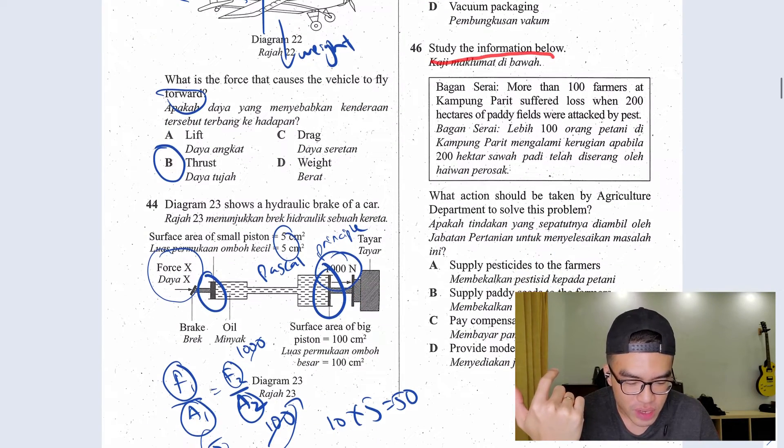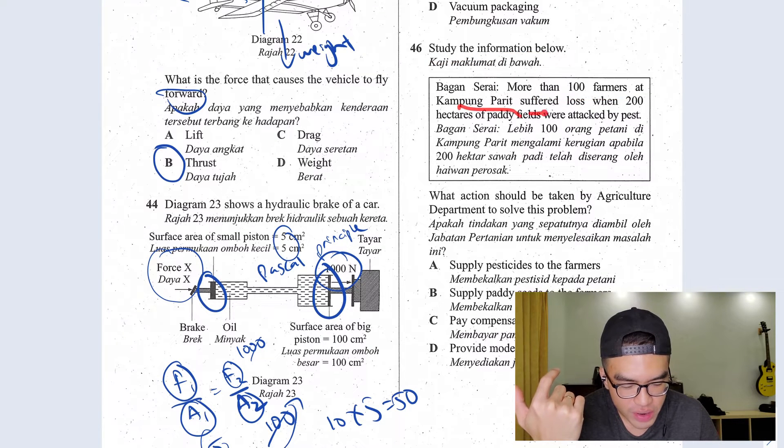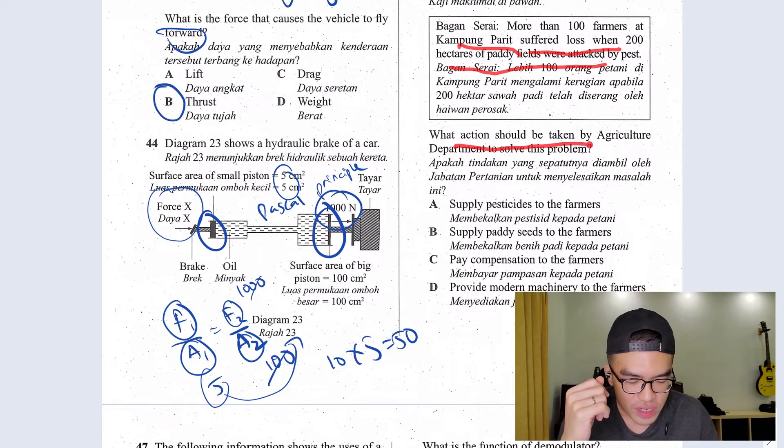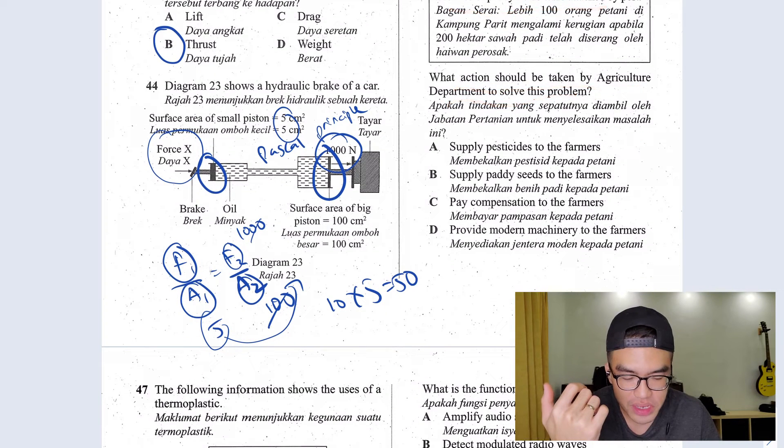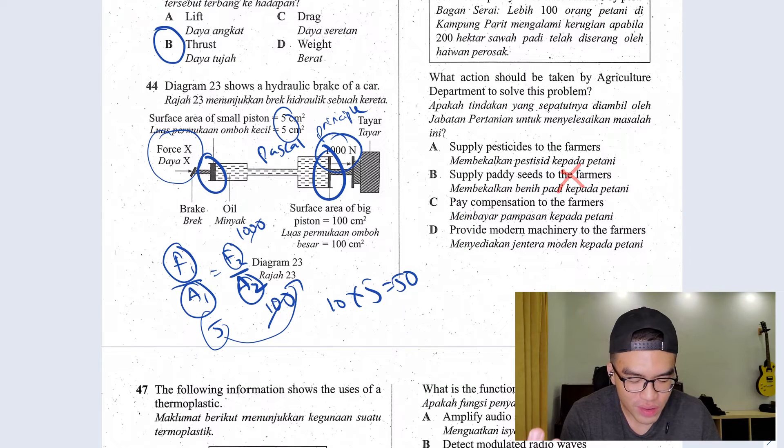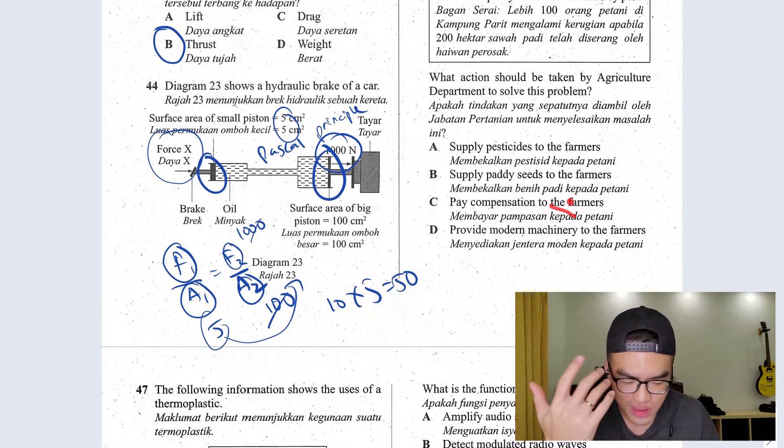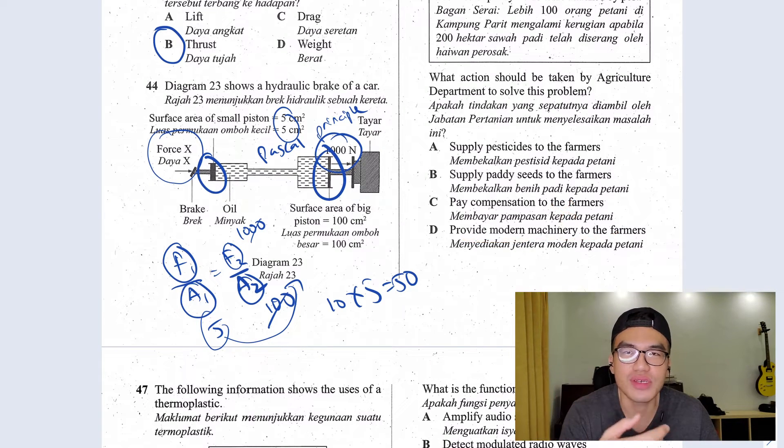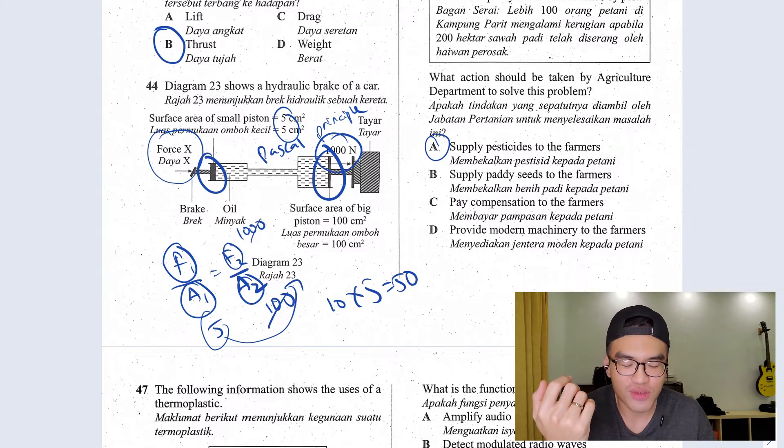Question 46. Study the information below. More than 100 farmers at Kampong Barit suffered loss when 200 hectares of paddy fields were attacked by pests. What action should be taken by agricultural departments to solve this problem? Supply pesticide for the farmer? Maybe. Supply paddy seeds to the farmers. They just had all their paddies killed off. Why would you give seeds to them? So this would be wrong. Pay compensation to the farmers. Paying them money isn't solving the problem. Provide modern machinery to the farmers. There is nothing to harvest. Why would you give them machine? So the answer very clearly that would be A.